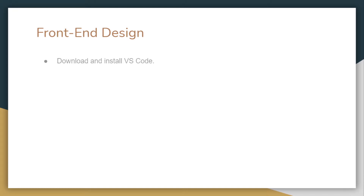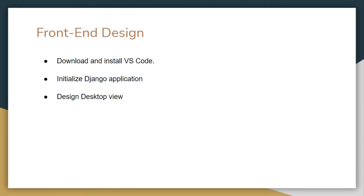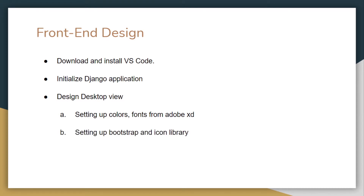Hello friends, this is Omwe and welcome back to CodePipe. We are currently designing the front-end of our e-commerce website. In the previous section we saw how to install VS Code and how to initialize our Django application. We also set up our templates. In this video we will start designing our desktop view using HTML and CSS. We will set up colors and fonts from Adobe XD, then set up the Bootstrap library and icon library.